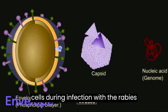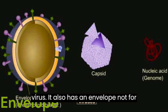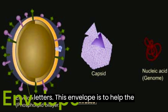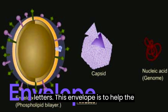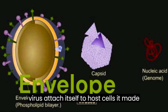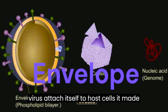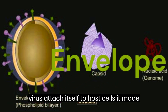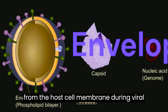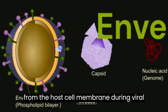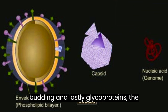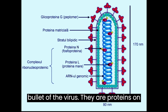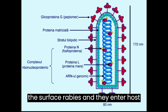The rabies virus also has an envelope — not for letters. This envelope helps the virus attach itself to host cells. It is made from the host cell membrane during viral budding. And lastly, glycoproteins — the bullet of the virus. They are proteins on the surface of rabies, and they help the virus enter host cells.